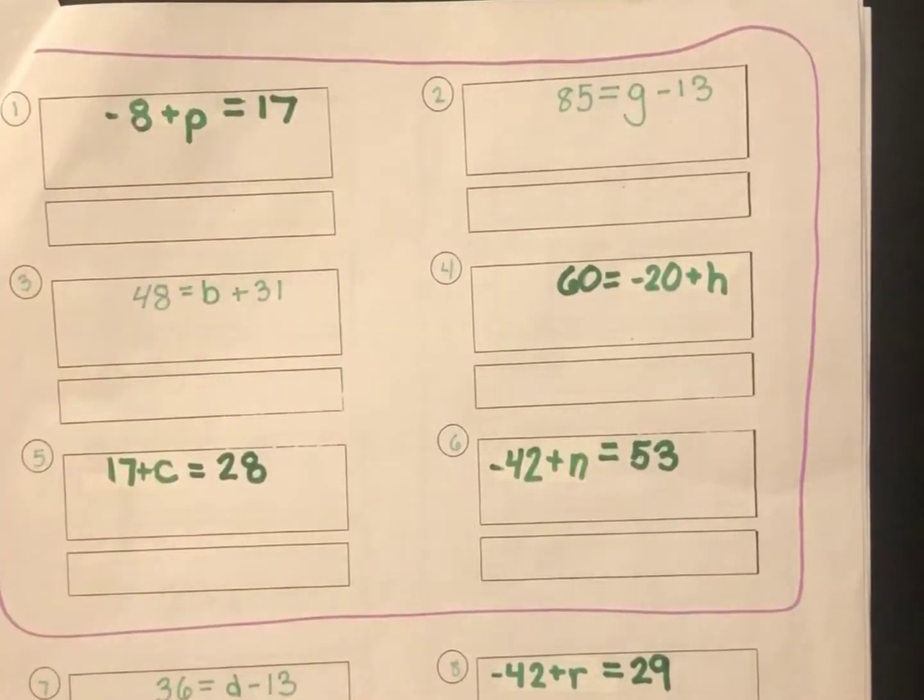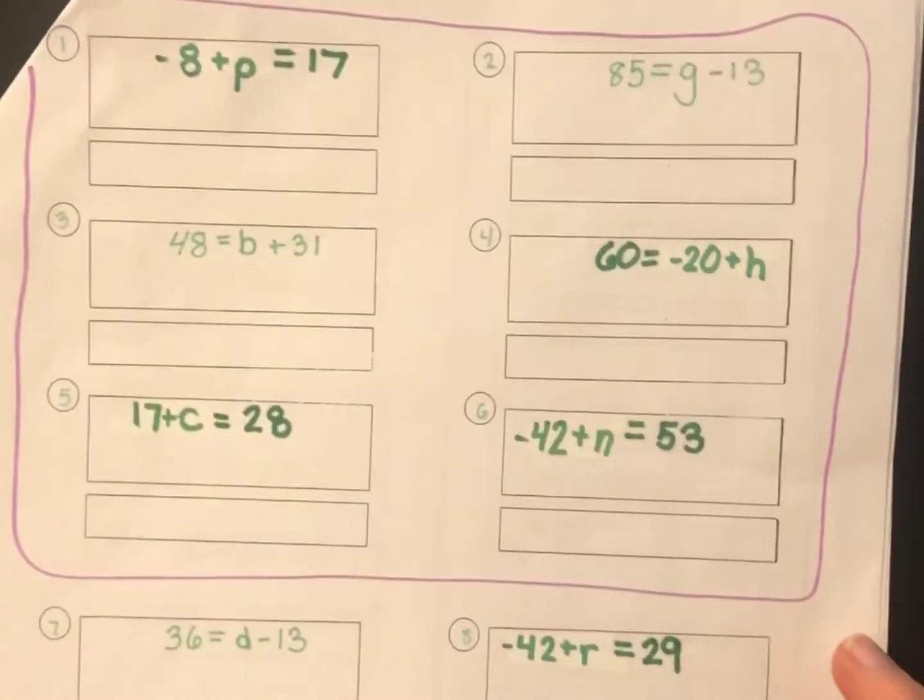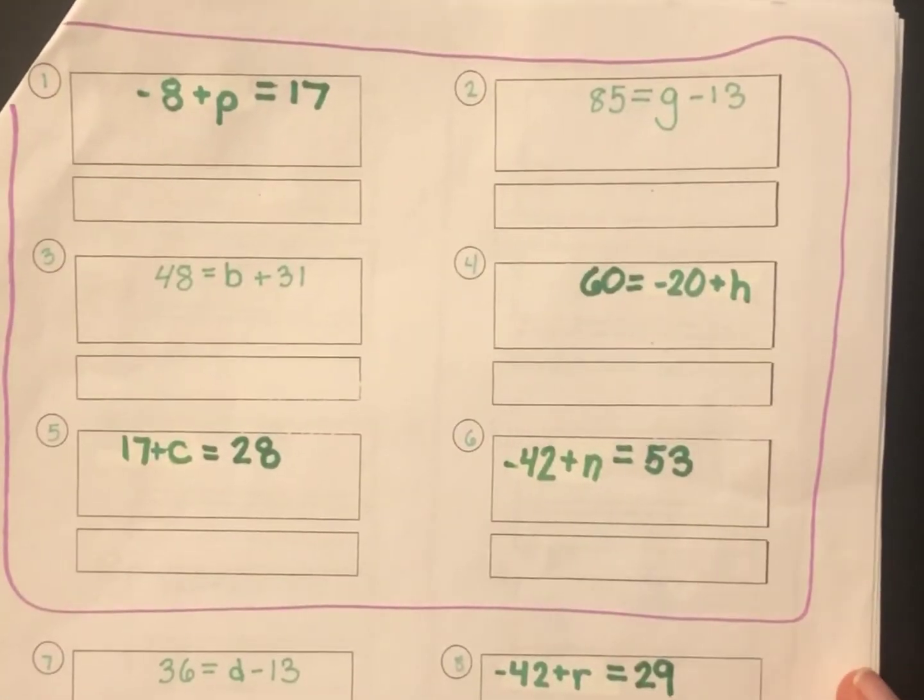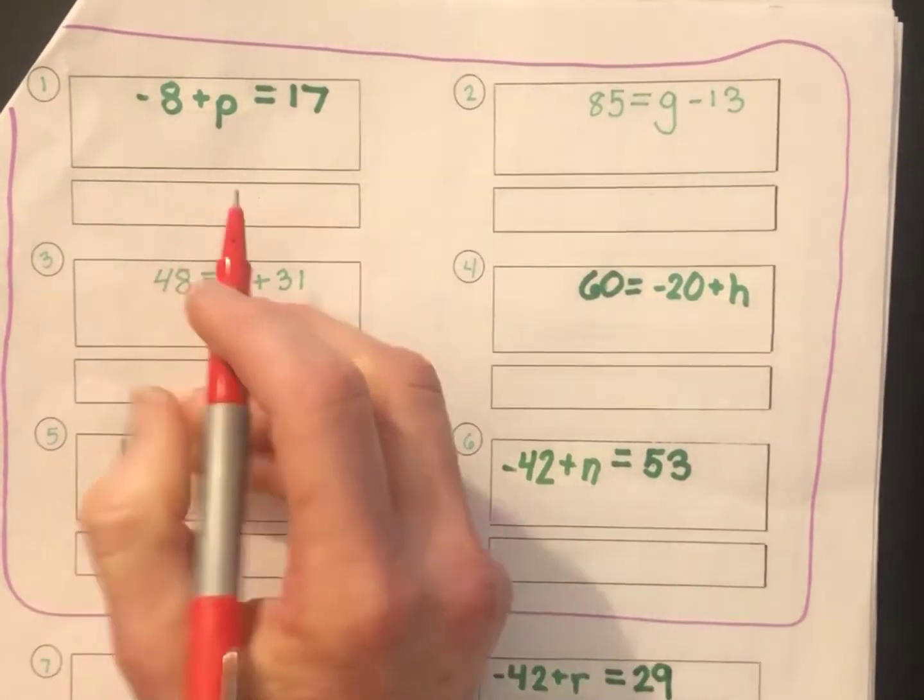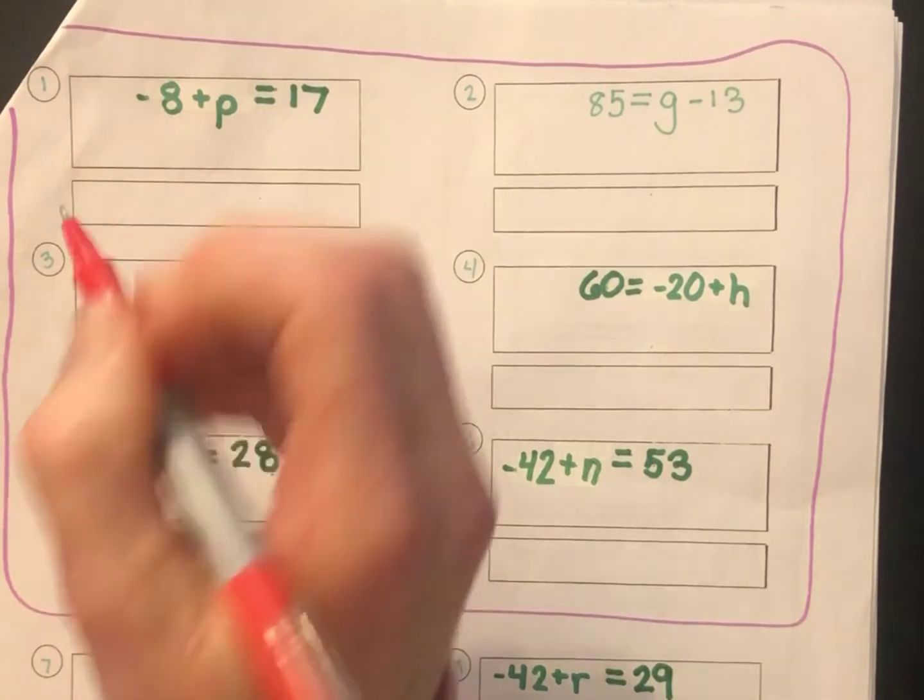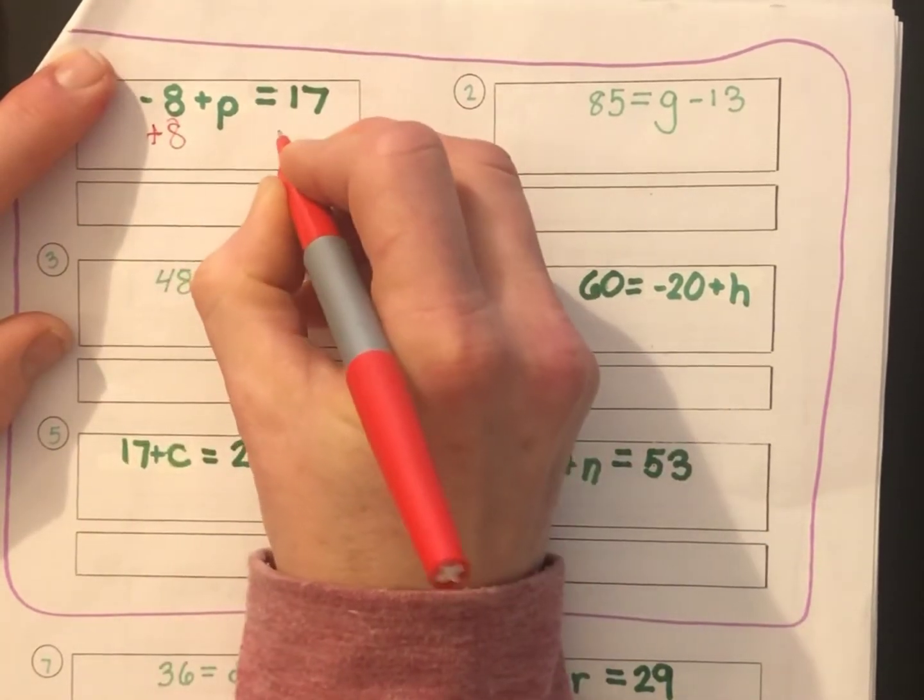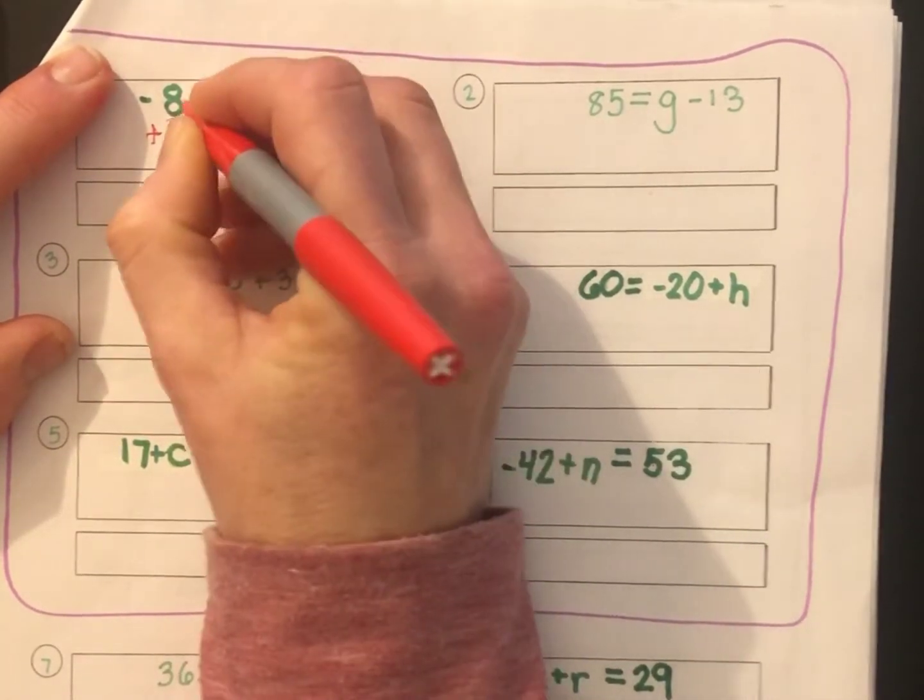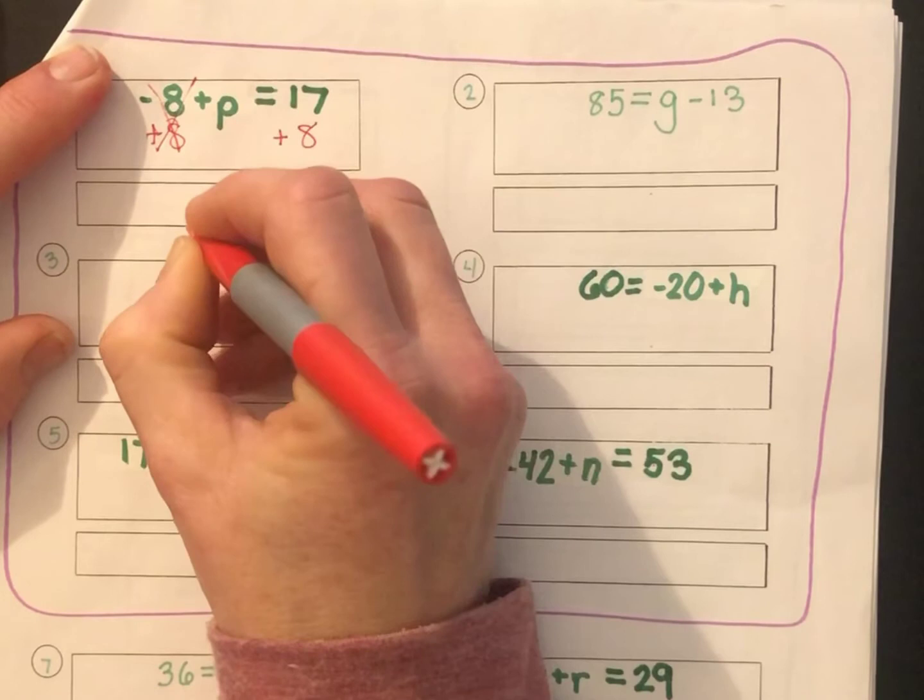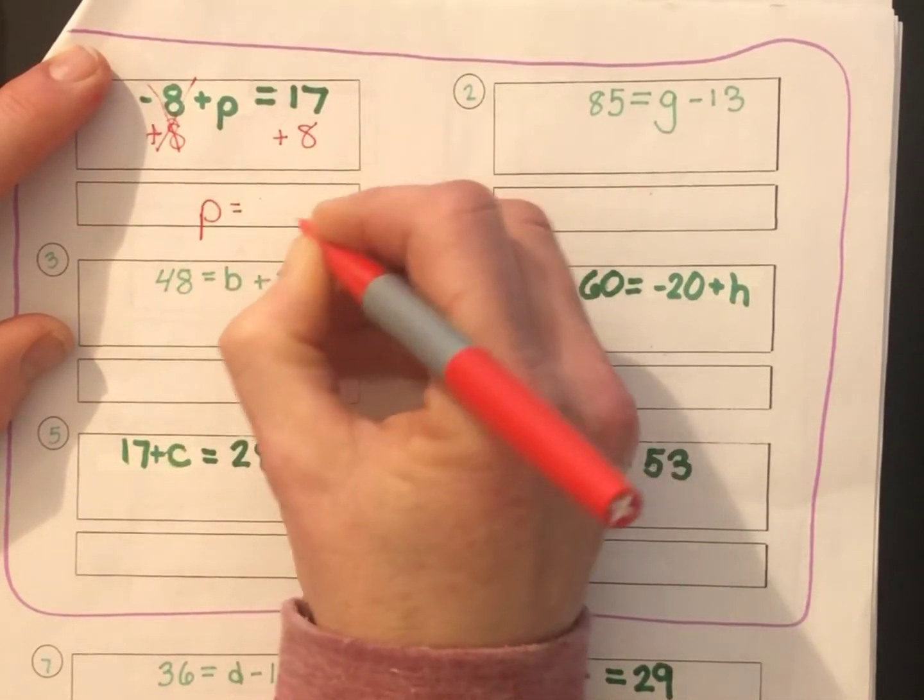Turn the page to 3, so we can do some of these together. These are basically the same things you've already done, but the order is a little bit different, and sometimes that can be a little confusing. The first one is negative 8 plus p equals 17. When you want to get p by yourself, you've got to get rid of that negative 8. The opposite of negative 8 is positive 8, so we'll add 8 to both sides. Negative 8 plus 8 is nothing, so we're left with p equals 17 plus 8 is 25.